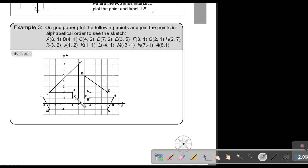H was 2 and 7. I is negative 3 and 2. J is 1 and 2. K is 1 and 1. L is negative 4 and 1. M is negative 3 and negative 1. N is 7 and negative 1. And A will again be 8 and 1.